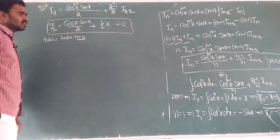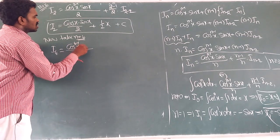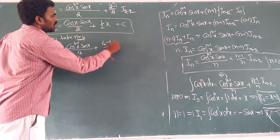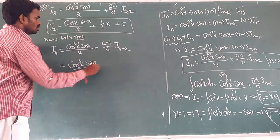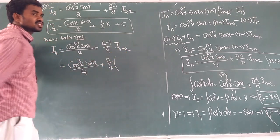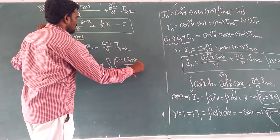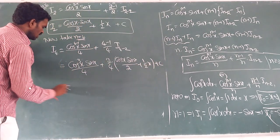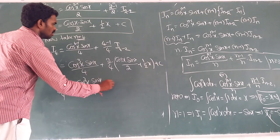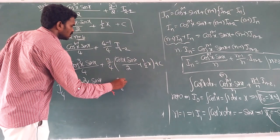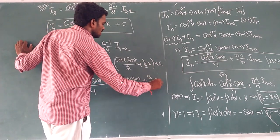Now take n = 4: I_4 = cos^3(x)·sin(x)/4 + (3/4)·I_2. Substituting I_2 = cos(x)·sin(x)/2 + x/2: I_4 = cos^3(x)·sin(x)/4 + (3/4)·(cos(x)·sin(x)/2 + x/2) = cos^3(x)·sin(x)/4 + (3/8)·cos(x)·sin(x) + (3/8)·x + C. This is the answer for the second question.